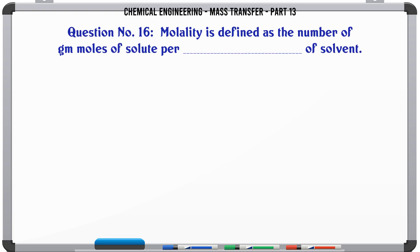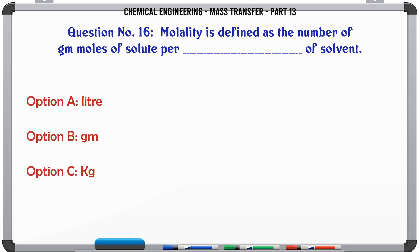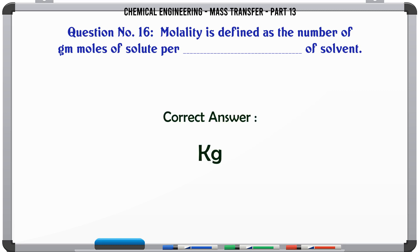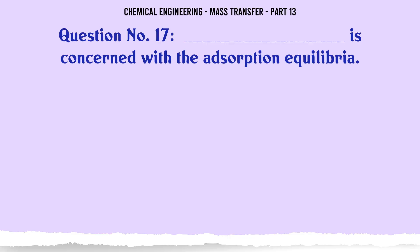Molality is defined as the number of gram moles of solute per ___ of solvent: A. Liter. B. Gram. C. Kg. D. M³. The correct answer is: Kg.